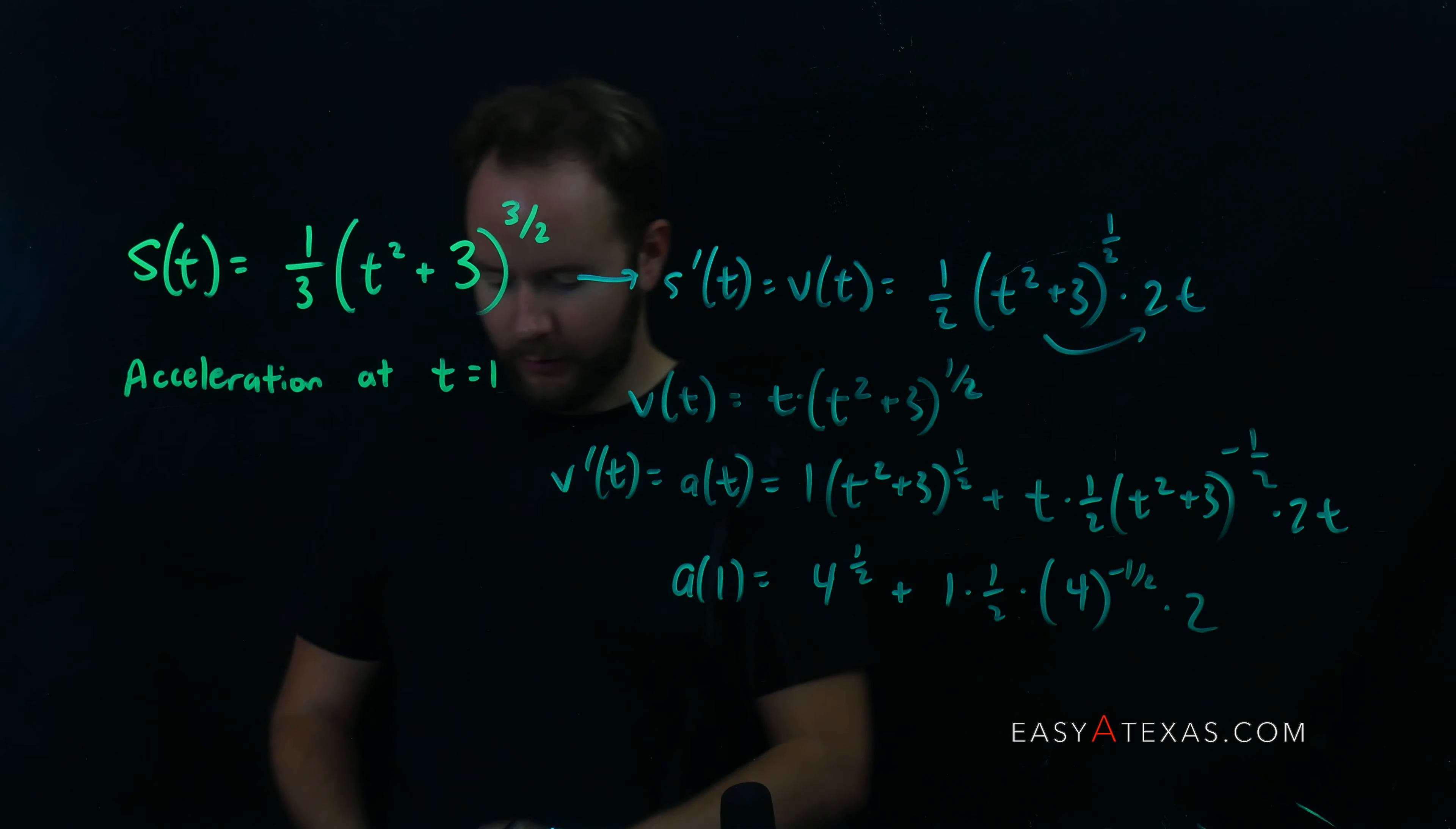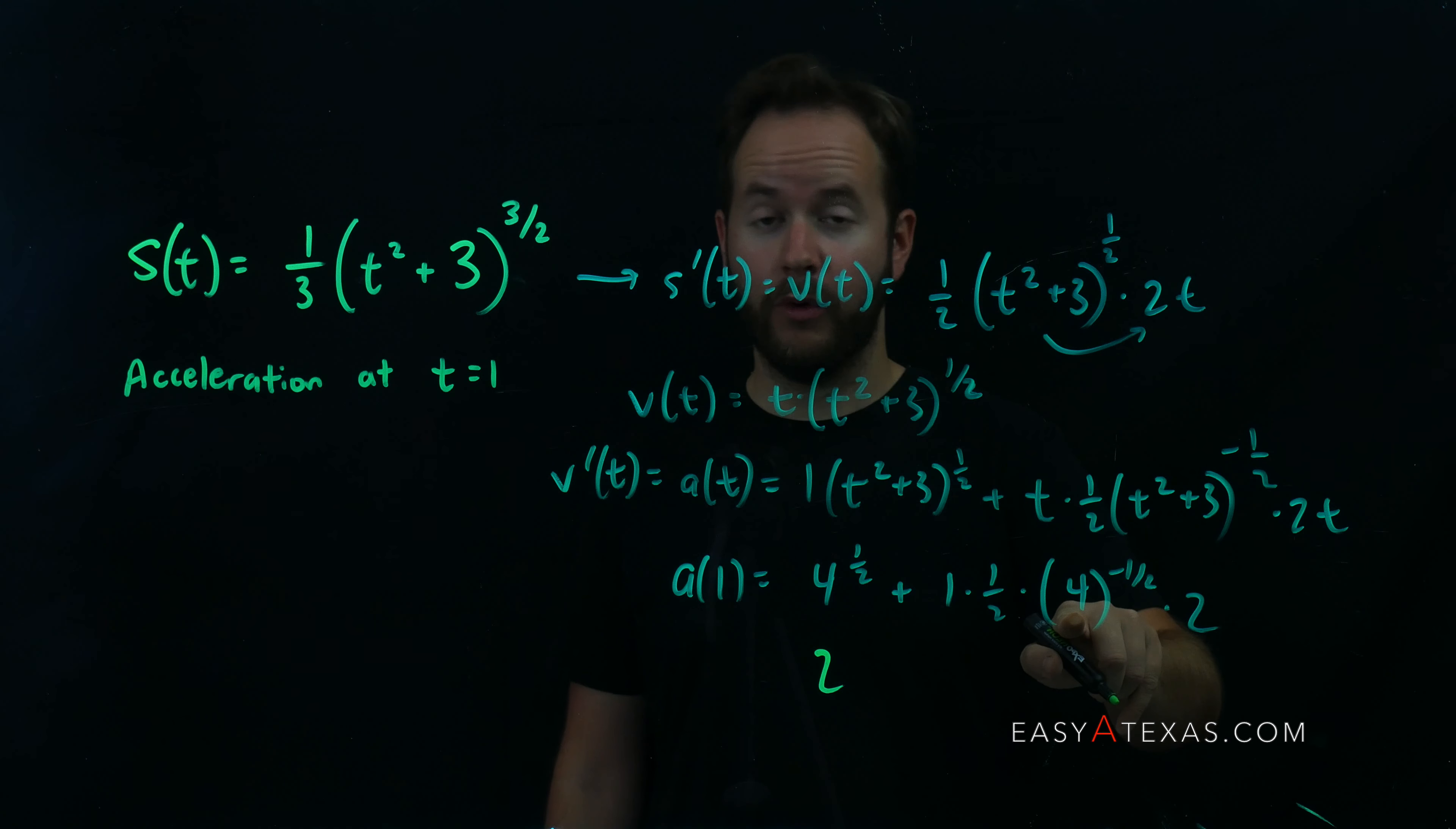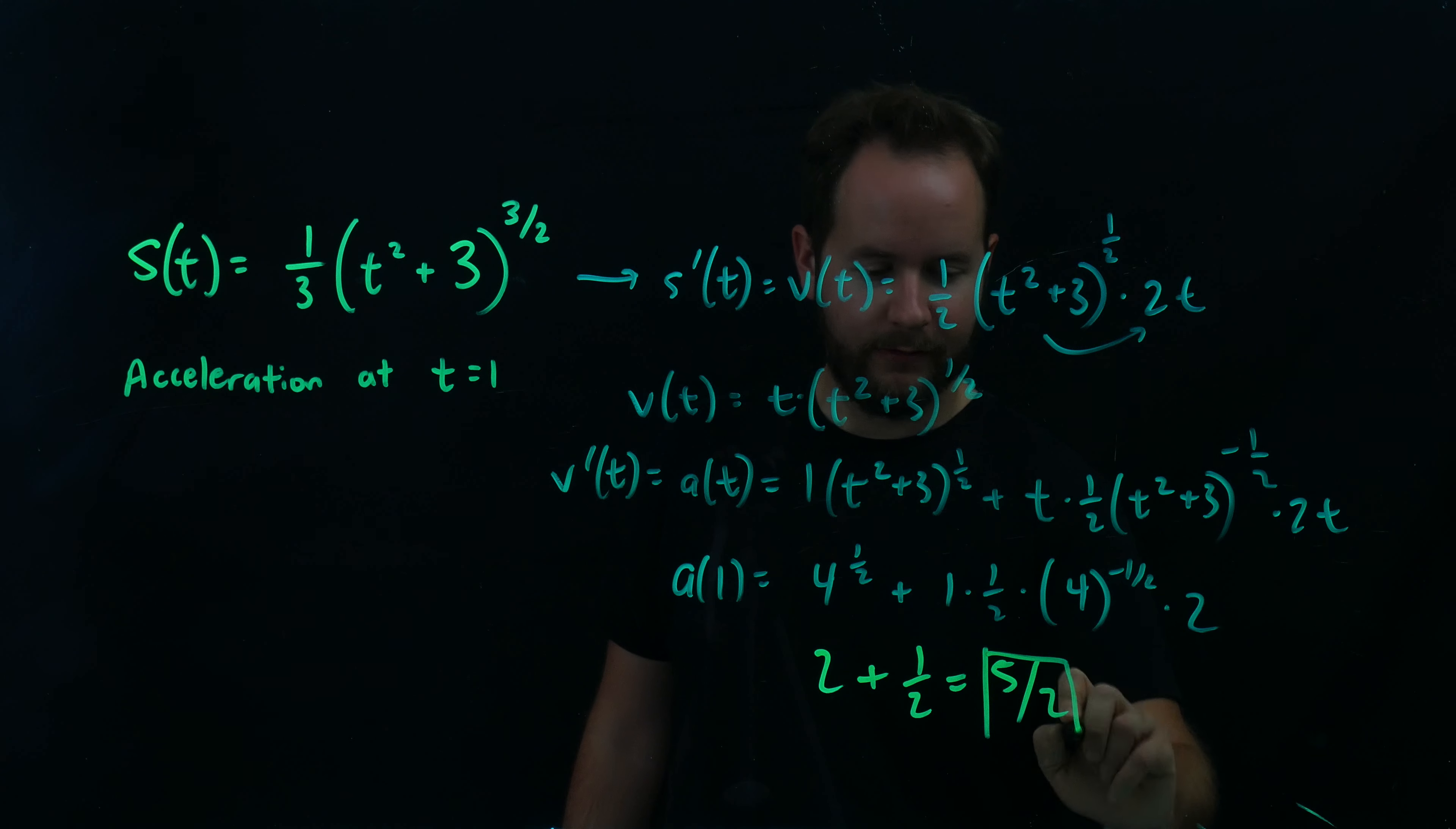Okay, let's figure out what this answer is. Four to the one half is better known as two, that's the square root of four. Four to the negative one half, we take the reciprocal and take the square root. So four, the square root gives me two, and flipping it gives me one half, so we have one half times one half is one fourth, times two would be one half, so we have two plus one half for an answer of five halves, and that is our final answer.